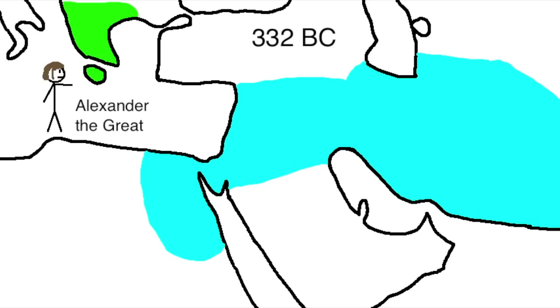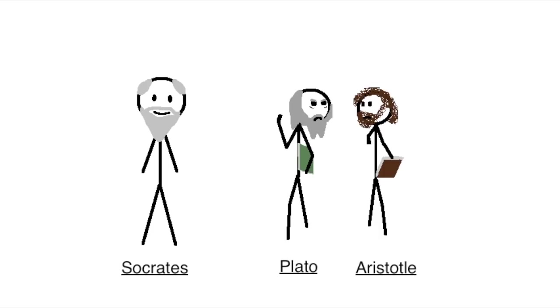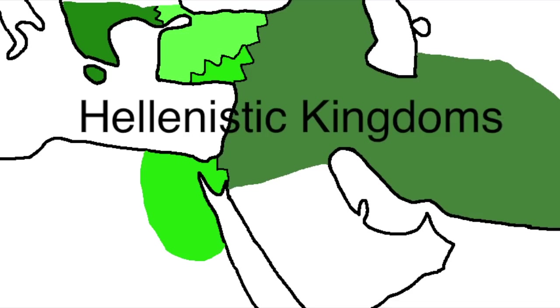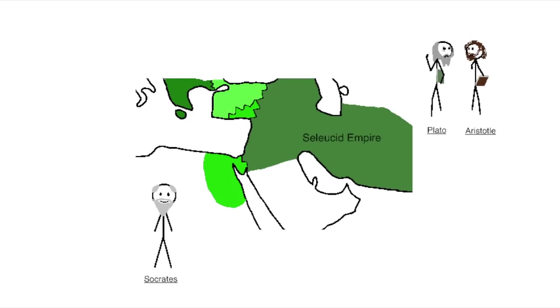In 332 BC, Alexander the Great conquered the entire Persian Empire and spread the Greek philosophical ideas of Socrates, Plato, and especially Aristotle over the entire region. Alexander's empire fractured into a number of small kingdoms after his death, which became known as the Hellenistic Kingdoms, one of which, the Seleucid Empire would stay in control of Israel. But the ideas that Alexander the Great spread would stay in all of these places and had a lasting effect on all of the people he conquered, including the Jews.